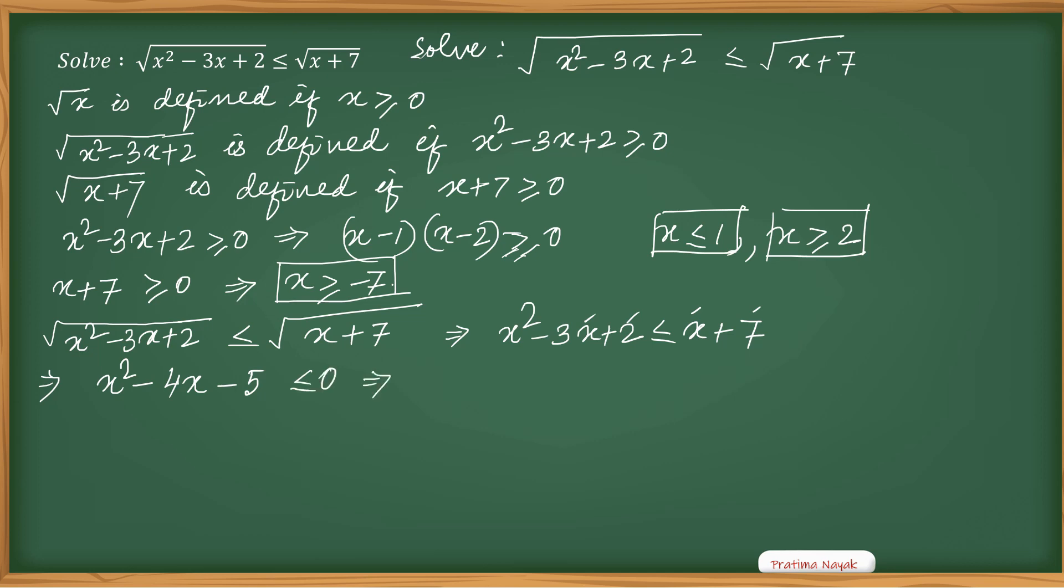So let me factorize. This will be (x-5)(x+1) ≤ 0. Less than or equal to 0 means it is negative. So I am getting x = 5 and x = -1. This is negative when x > -1 and x < 5.